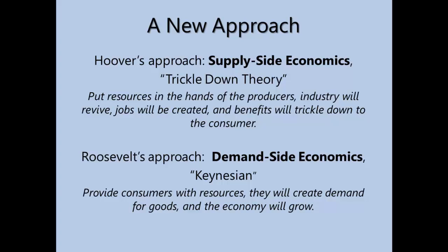In 1932, Herbert Hoover's popularity was so low that he was very handily defeated by Franklin Roosevelt, who had intentions to address the issues of individuals as well as government's role in dealing with industry. Roosevelt had a much different perspective on things.